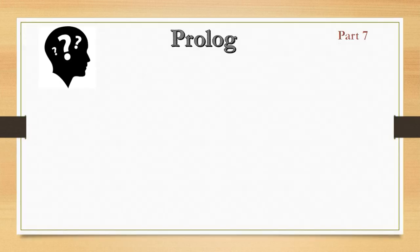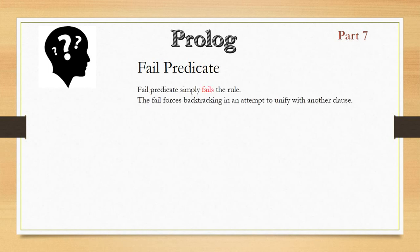First we will see the fail predicate. Fail itself makes the whole statement to be failed, that means false. The fail predicate simply fails the rule. The fail forces backtracking in an attempt to unify with another clause. Fail will make the whole statement to be false, or you can say the rule to be false, and that's why it helps in backtracking to the same clause, unifying with another clause.